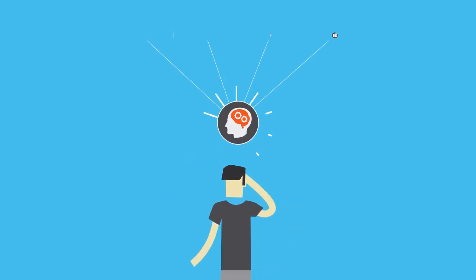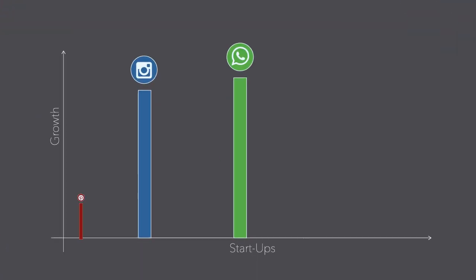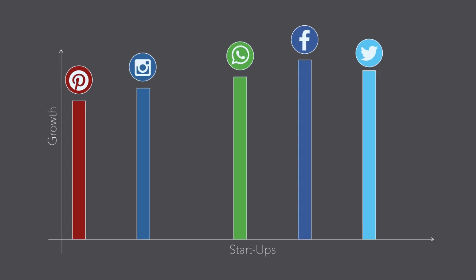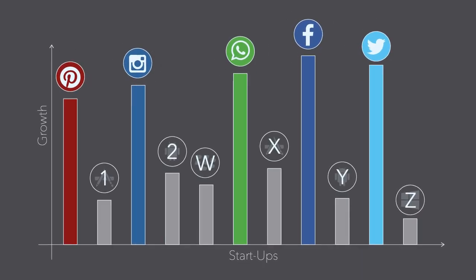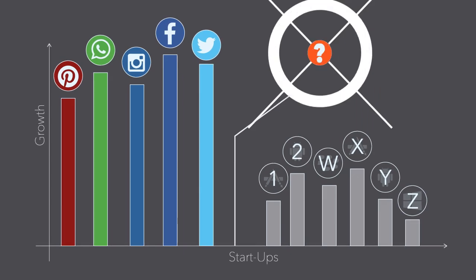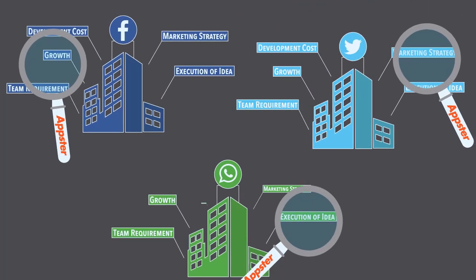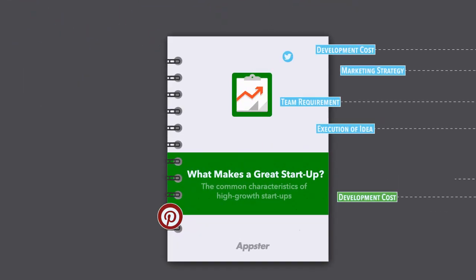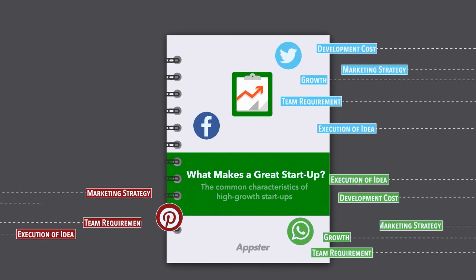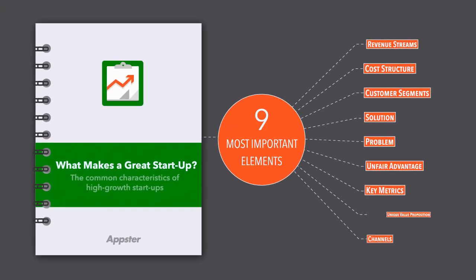If you're looking to create an app yourself, we figured you'd be interested to know what separates high-growth startups like Facebook, Twitter, and Instagram from those that don't seem to be able to build any kind of traction at all. To find out, Appster has been analyzing the characteristics of the world's fastest-growing startups, and we've collated our findings into one easy-to-read and completely free white paper.